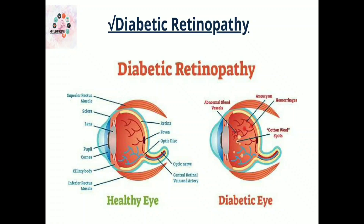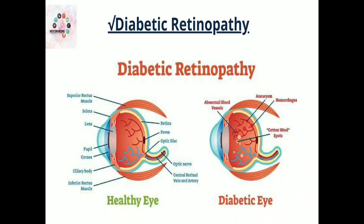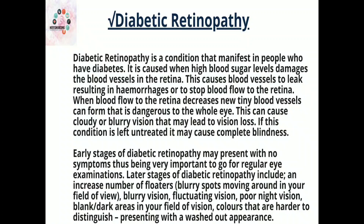Next we have diabetic retinopathy — a condition that manifests in people who have diabetes, caused when high blood sugar levels damage the blood vessels in the retina. This causes blood vessels to leak, resulting in hemorrhage, or to stop blood flow to the retina. When blood flow to the retina decreases, new tiny blood vessels can form, which is dangerous to the whole eye. This can cause cloudy or blurry vision that may lead to vision loss, and if untreated, may cause complete blindness. Early stages may present with no symptoms, making regular eye examination very important.